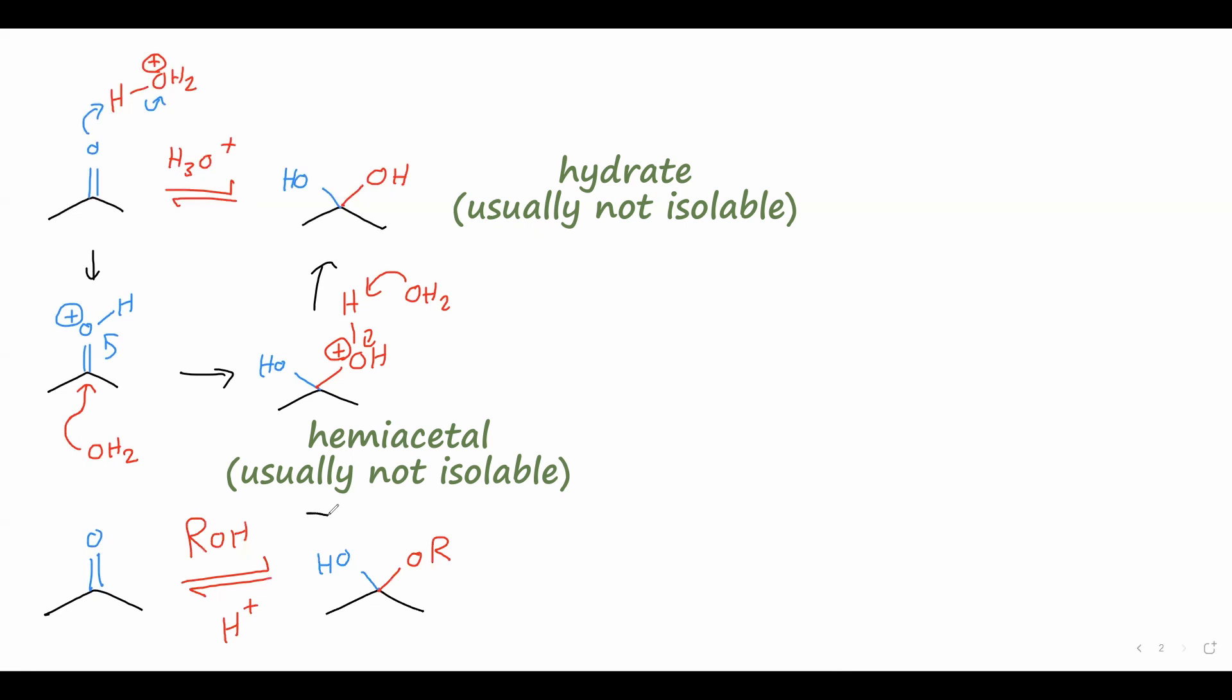Now these hemiacetals are usually not isolable, much like hydrates. However, if we treat with additional alcohol, these are also in equilibrium with the acetal. This is where we now have two OR groups on the same carbon. And acetals are often stable enough to be isolated, which makes them useful in many situations.